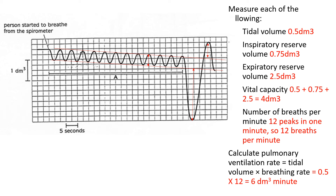The tidal volume is 0.5 dm³. The reason is that the height of the small lines is 2 squares, and on the scale 4 squares equals 1 dm³, so 2 squares gives you 0.5 dm³. The inspiratory reserve is 0.75, expiratory reserve is 2.5. If you're unclear why those numbers are used, go back to the definitions section to make sure you've got the right definition for each factor.